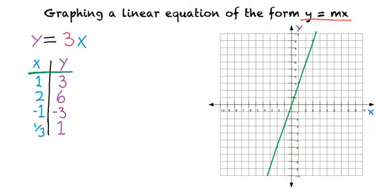What if we had a different number instead of 3? Like what if the equation said y is equal to 1 half x? Good question. These equations are similar in that they're both of the form y equals mx. But in our first example, m equaled 3, and in this example, m equals 1 half.